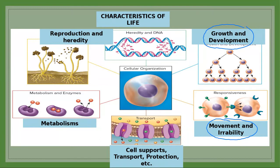The third characteristic of life is that all living things have the ability to support themselves. They can absorb, find, and eat food. They have the ability to transport materials, chemicals, and molecules from outside to inside the cell or vice versa. They can also protect themselves by producing enzymes, antibodies, etc.